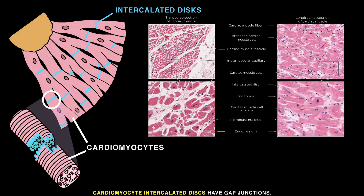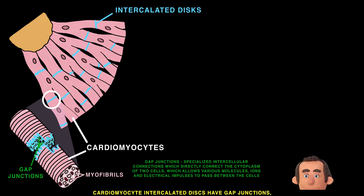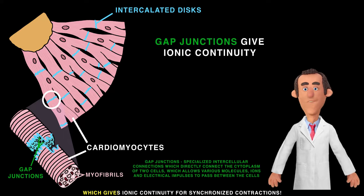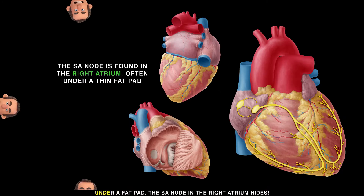Cardiomyocyte intercalated discs have gap junctions, which provide ionic continuity for synchronized contractions.